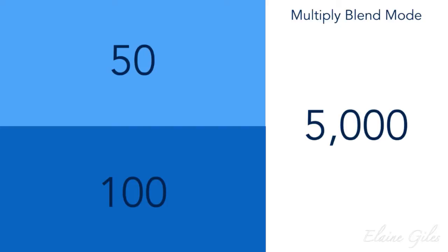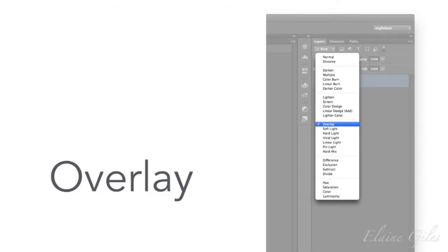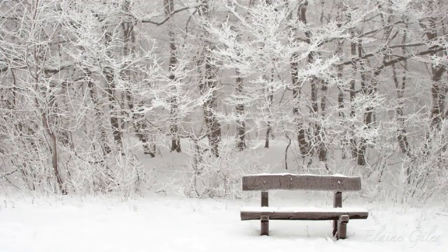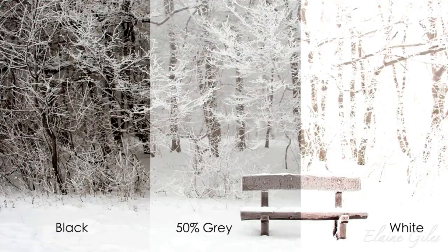To demonstrate: if you take the overlay blend mode and apply it to a blend layer of solid blocks of colour — black, grey, and white — sitting above a base layer photograph, you get a high contrast result. The black is much darker, the white is blown out — a very high contrast, nuclear winter look. In the middle, the 50% grey is pretty much ignored. So you can see the effect of what blend modes do to an image.